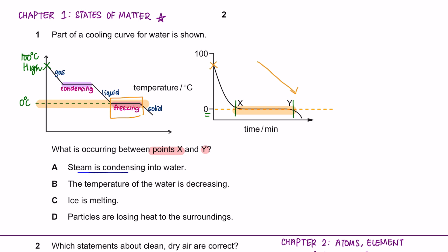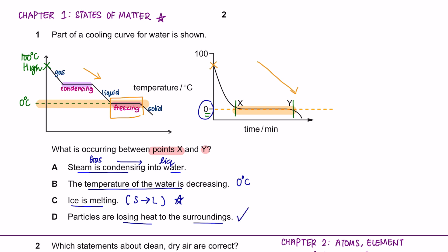The period X to Y is similar to this level. The process here is freezing. Option A says steam is condensing into water — that's gas turning into liquid, which happens at a different stage. The temperature of the water here remains constant at zero degrees Celsius, not decreasing. Ice melting is not correct either — that is solid turning into liquid, which happens on a heating curve. Option D, particles are losing heat to the surrounding, is correct because during freezing, particles lose heat to make bonds. So the answer is D.